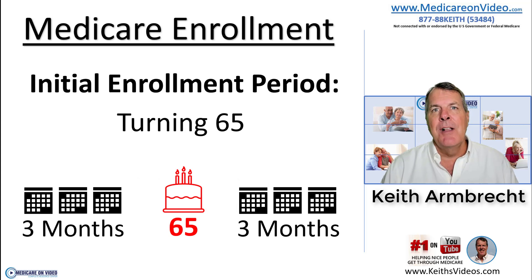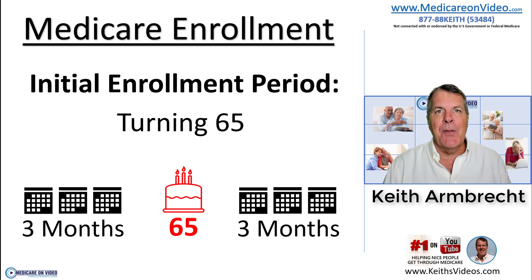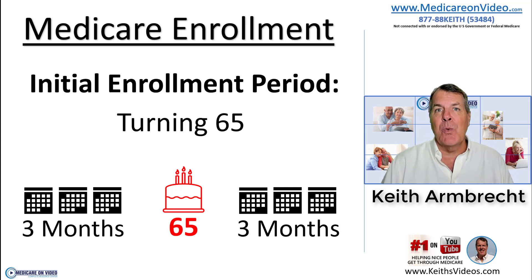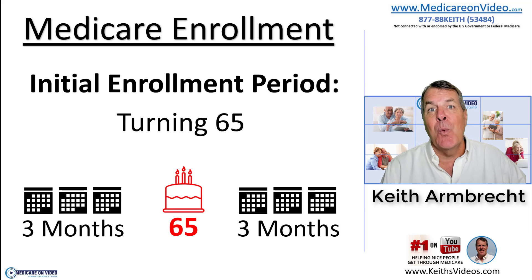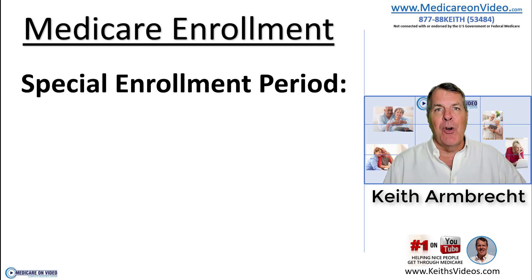You have a seven-month window when you're turning 65 that wraps around your 65th birthday — three months before, the month of, and three months after. But really, if you want to be on Medicare at 65, do it in the three months before or the month of your birthday. It's generally best to do it 60 to 90 days out so everything is settled. Give me a call or send an email and we'll put those pieces in place so that when you turn 65, everything starts exactly as it should.